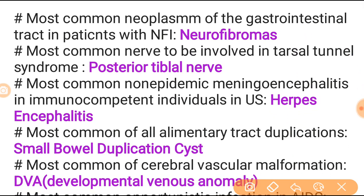Most common neoplasm of the gastrointestinal tract in the patient with neurofibromatosis type 1 - remember both types of neurofibromatosis as many questions are asked on this topic. Most common nerve to be involved in tarsal tunnel syndrome is the posterior tibial nerve - it is only the posterior tibial nerve that passes through the posterior side of the tarsal tunnel.